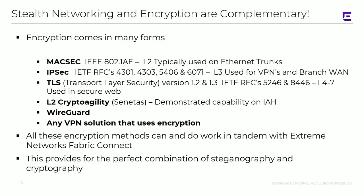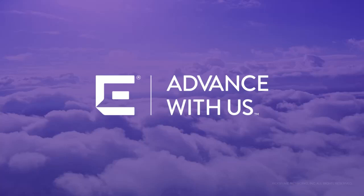Encryption comes in many forms, but the key takeaway is that encryption and stealth networking are vastly complementary. Any VPN solution that uses encryption can run over the Fabric Connect environment, and all of these methods can work in tandem with Xtreme Networks' Fabric Connect — providing the perfect combination of steganography and cryptography. I hope this was entertaining and helpful. This is Ed Kohler with Xtreme Networks, signing off. Have a great day.